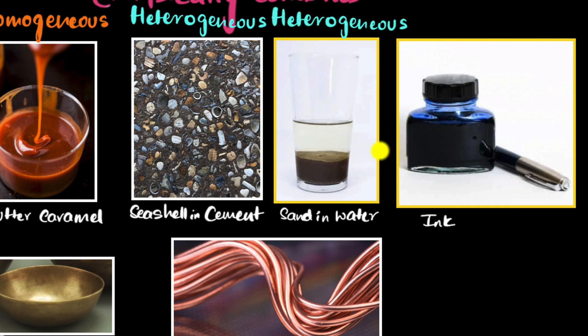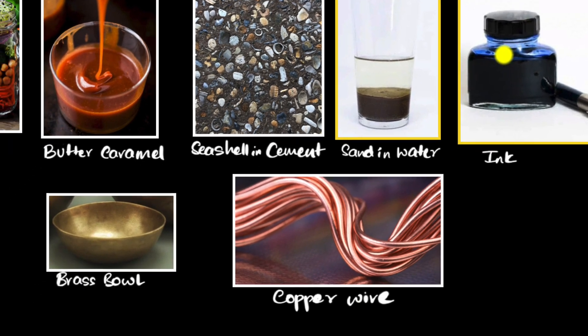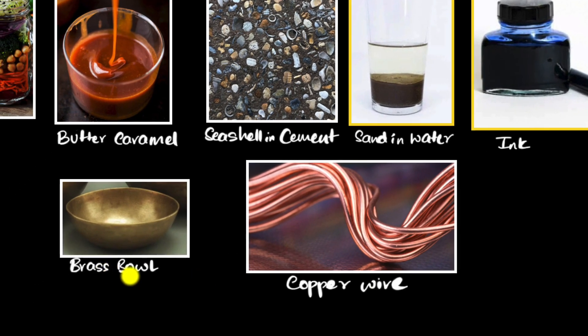What about ink? Well, over here, there's a uniform distribution. I cannot see any boundaries, any distinctions. This is a uniformly distributed mixture. So this is a homogeneous mixture. What about brass? This could be tricky. What exactly is brass? Well, brass is a combination mostly of copper and zinc. But look, it is mixed uniformly. I cannot see the distinction between copper and zinc. And so this is again a homogeneous mixture.